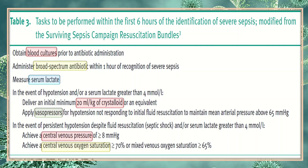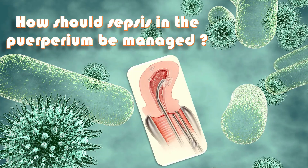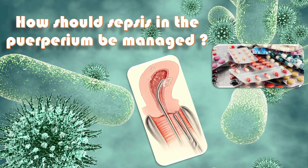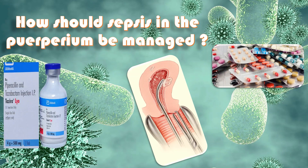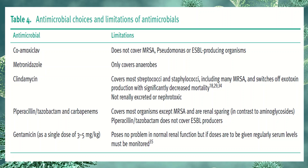The focus of infection should be sought and dealt with — this may be by uterine evacuation or drainage of a pelvic abscess or wound. Broad-spectrum antibiotics should be given to cover the procedure. Depending on culture results and the type of infection, the combination of either piperacillin-tazobactam or clindamycin provides one of the broadest ranges of treatment for severe infection. Vancomycin and teicoplanin can be used for MRSA.